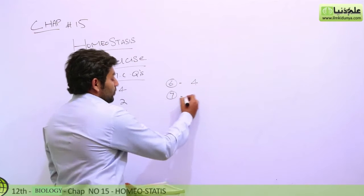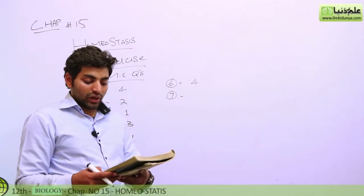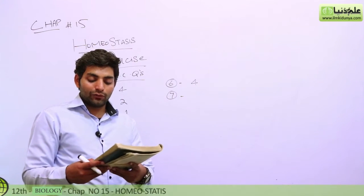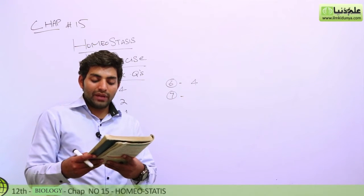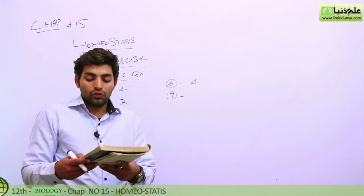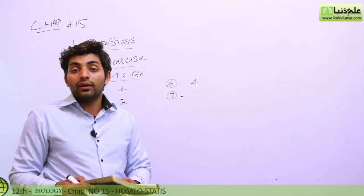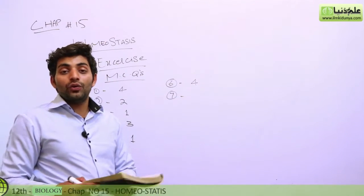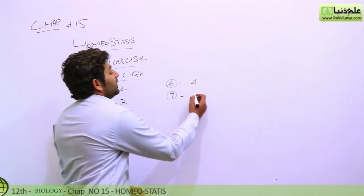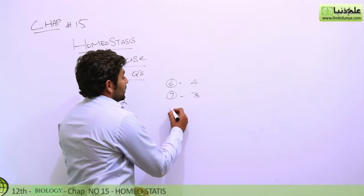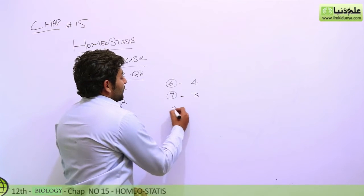The seventh MCQ asks: the excretory structure that delivers urine from the kidney to the urinary bladder — options are urethra, pelvis, collecting tubules, or ureter. The answer is option 3, the ureter.